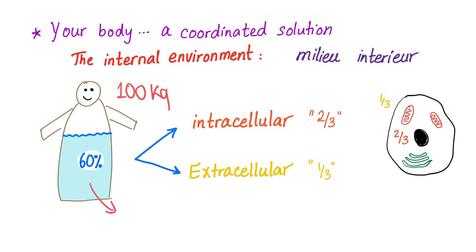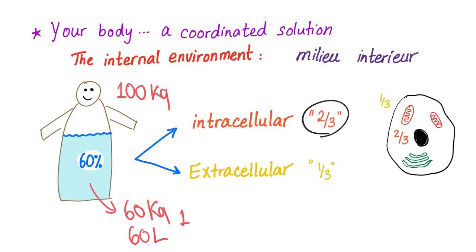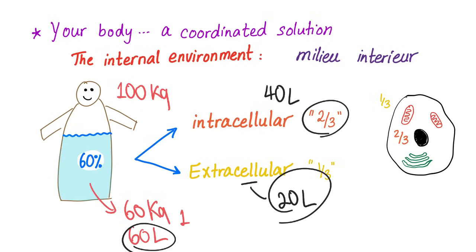Suppose your weight is 100 kilograms. 60 kilograms will be water, which equals 60 liters, because the density of water is one — hello physics. So the intracellular fluid is two-thirds of the 60 liters, which is about 40 liters. The extracellular is the rest, which is 20 liters. Total is 60. Makes sense.